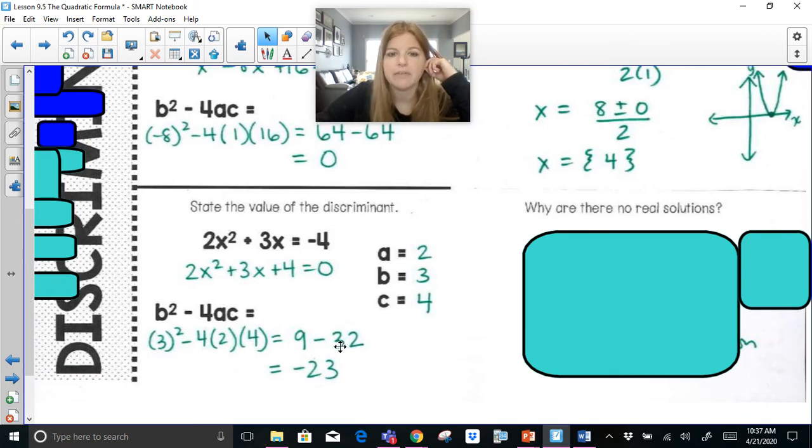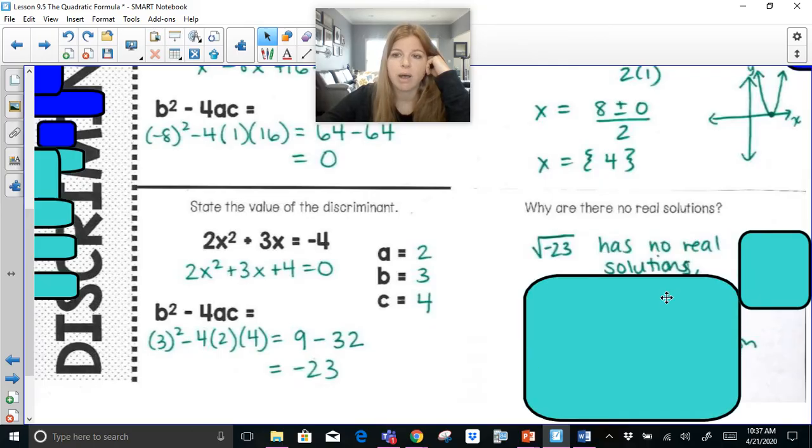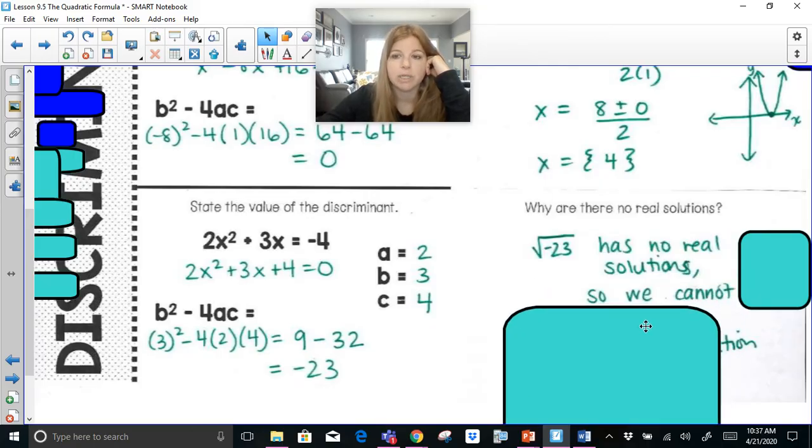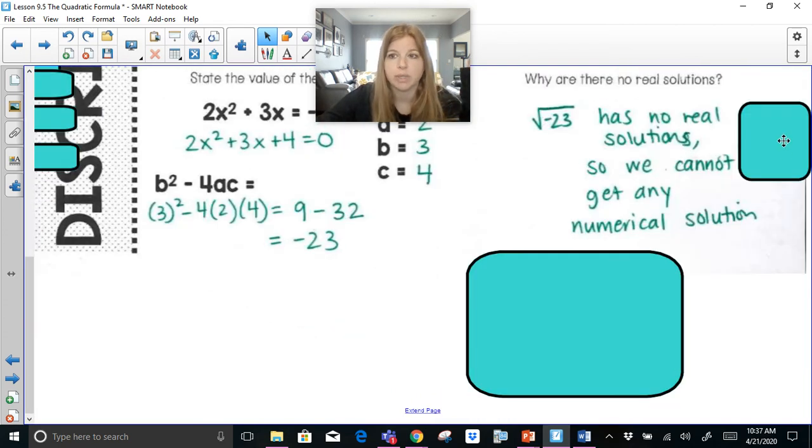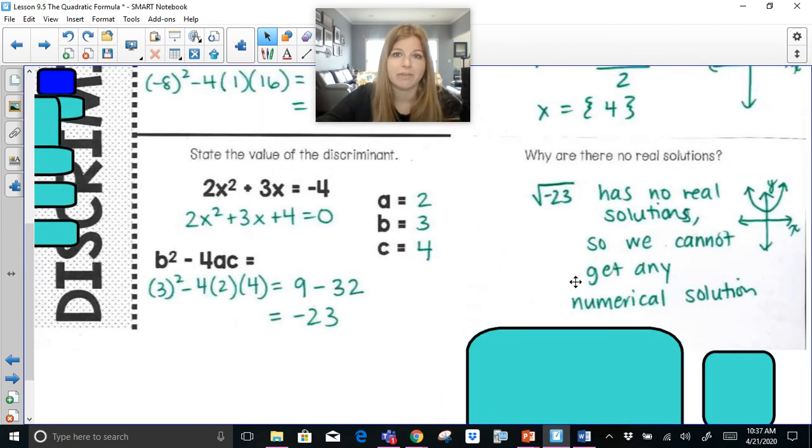If I was to plug this into my quadratic formula, I would have to take the square root of this negative 23. We can't take the square roots of negative numbers. That's not a real number. Right now in Algebra 1, all we know are real numbers. Since the square root of negative 23 has no real solutions, we can't get any solutions to this equation. That would be when you have a parabola that never touches the x-axis.